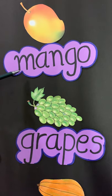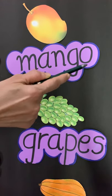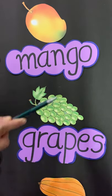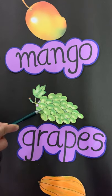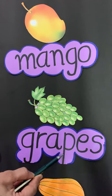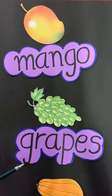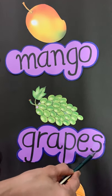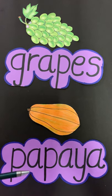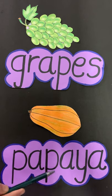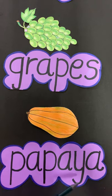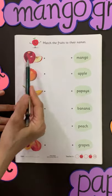This is a mango, and the spelling of mango is M-A-N-G-O, mango. These are grapes, and the spelling of grapes is G-R-A-P-E-S, grapes. Last fruit is papaya, and the spelling of papaya is P-A-P-A-Y-A, papaya.